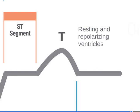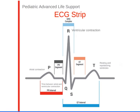Following ventricular contraction, the ventricles rest and repolarize, which is registered on the ECG strip as the T wave. The atria repolarize also, but this coincides with the QRS complex and therefore cannot be observed on the ECG strip. Together, a P wave, QRS complex, and T wave are indicative of normal sinus rhythm, or NSR.